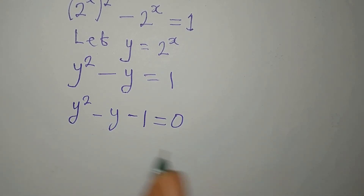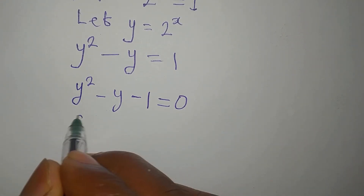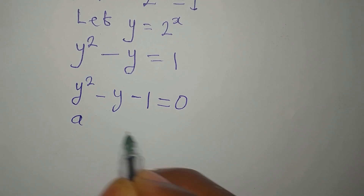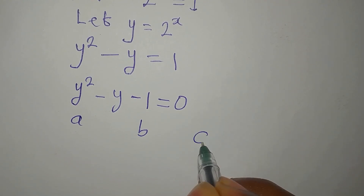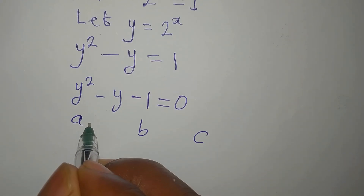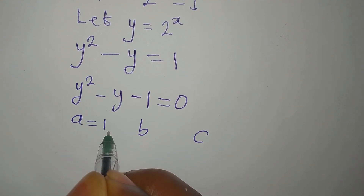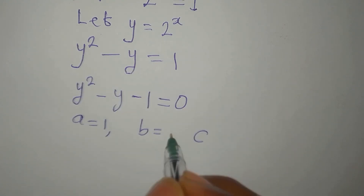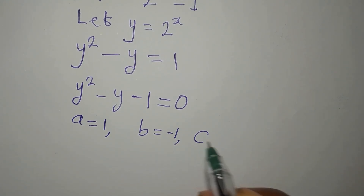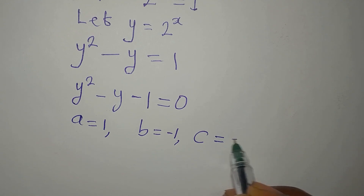We are going to solve this by using the formula method. To use the formula you have to get your A, your B, and your C. Our A is the coefficient of Y squared, which is 1. Our B is the coefficient of Y, which is minus 1. Then C is the constant, which is minus 1.